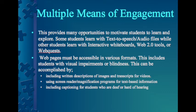With this in mind, accessibility to the web is extremely important. Web pages must be accessible in various formats — this includes for students with visual impairments or blindness, which can be accomplished by including written descriptions of images and/or transcripts for videos, using screen reader or magnification programs for text-based information, and including closed captioning for students who are deaf or hard of hearing. To this end, the World Wide Web Consortium has established guidelines in order to make the web accessible to all people.